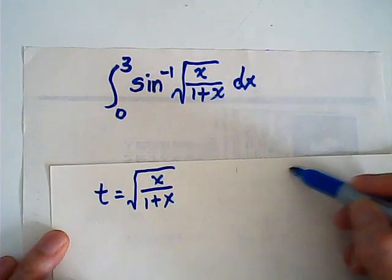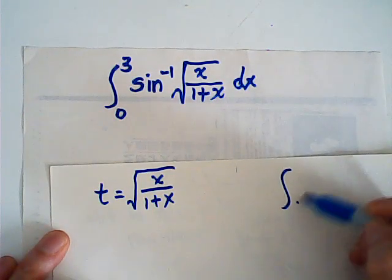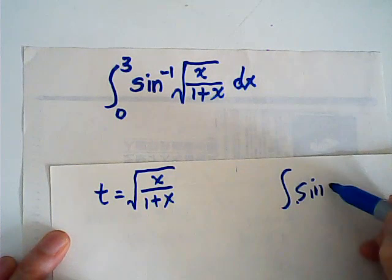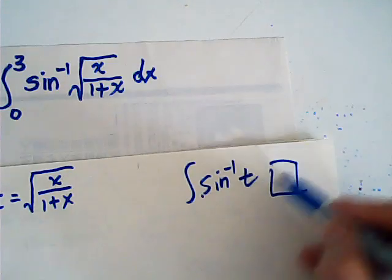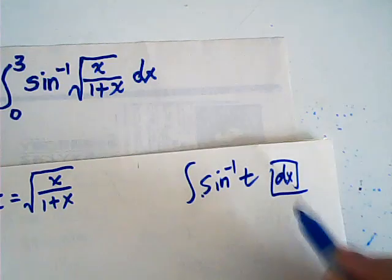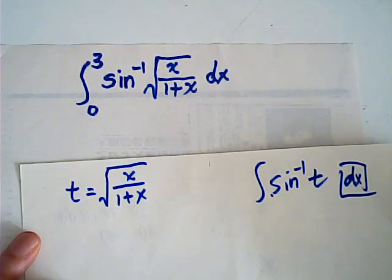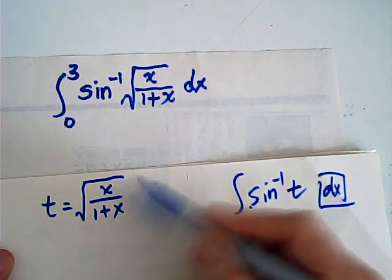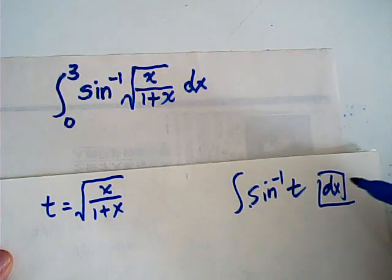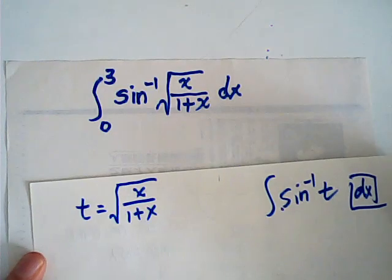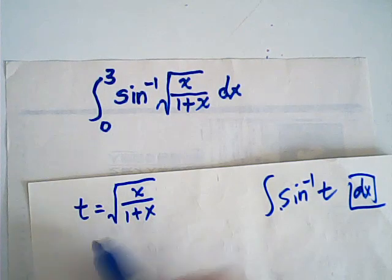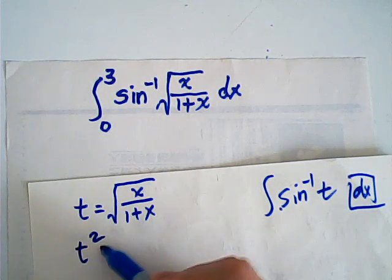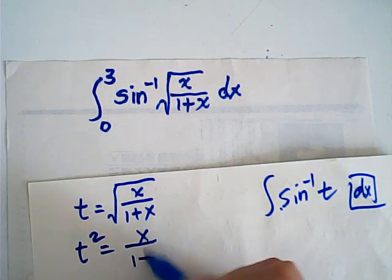Okay, this is okay. It becomes an arc sine t, right? The problem is this: you have to change dx in terms of t. If you can change dx into something with t and dt nicely, then we can finish. Now, t squared is equal to x over 1 plus x.